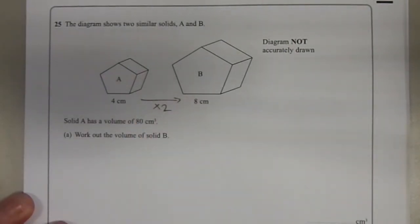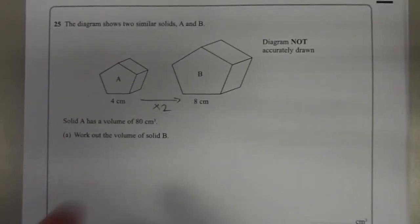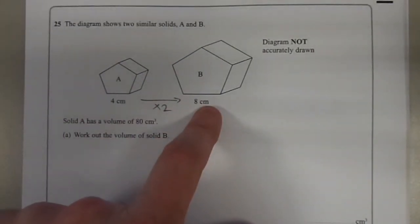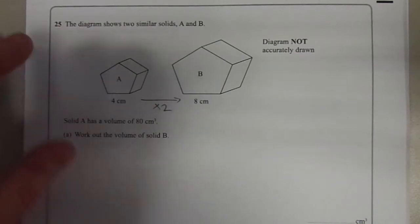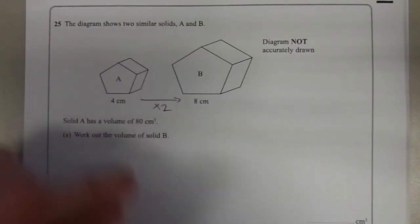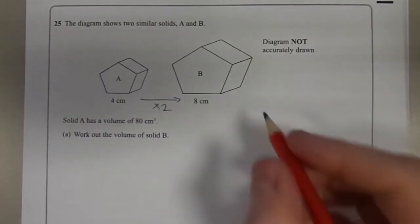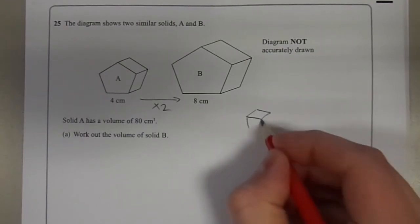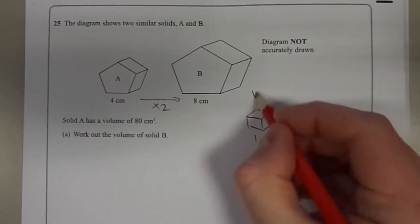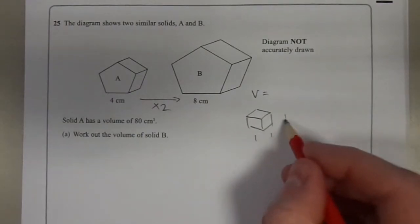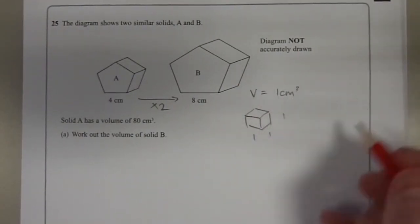the scale factor of enlargement is times 2. All of these lengths are twice as big as these lengths over here. That doesn't mean that the volume is going to be twice as big, though. If I pick a simpler example, a cube which is 1 by 1 by 1, that has a volume of 1 times 1 times 1, which is 1 centimetre cubed.